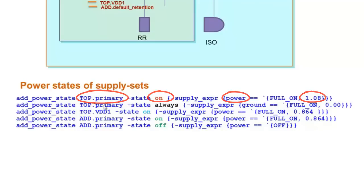Top.VDD1 Power has a state named On operating at 0.864V.